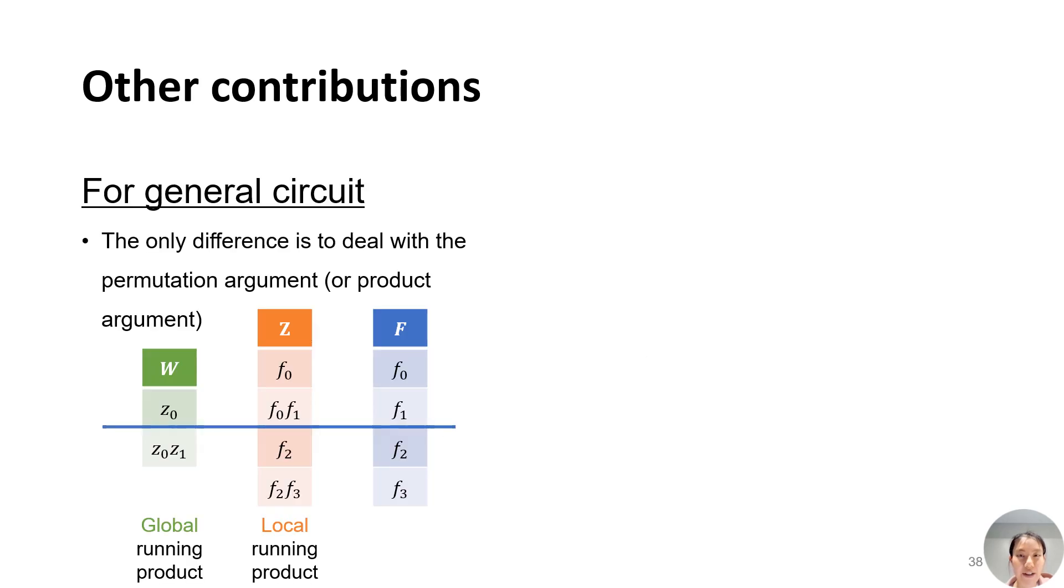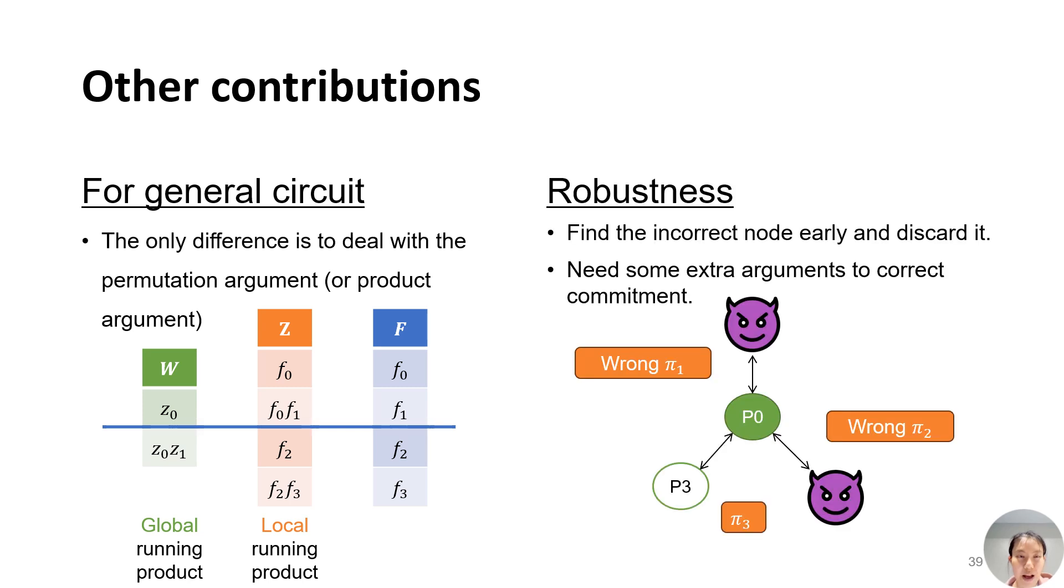There are other contributions in our work, including generalizing this scheme to arbitrary arithmetic circuits. The key point is to distributedly prove a grand product argument. Besides, we enhance the robustness of our protocol by allowing the master node to detect the wrong proof pieces for a data-parallel circuit and generate a proof for the right pieces without rerunning the other correct nodes. For those parts, please check our paper for further details.